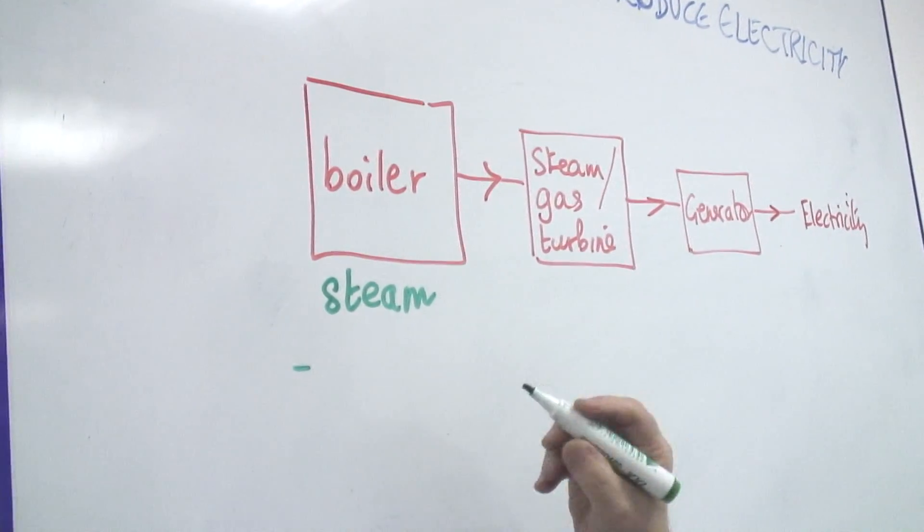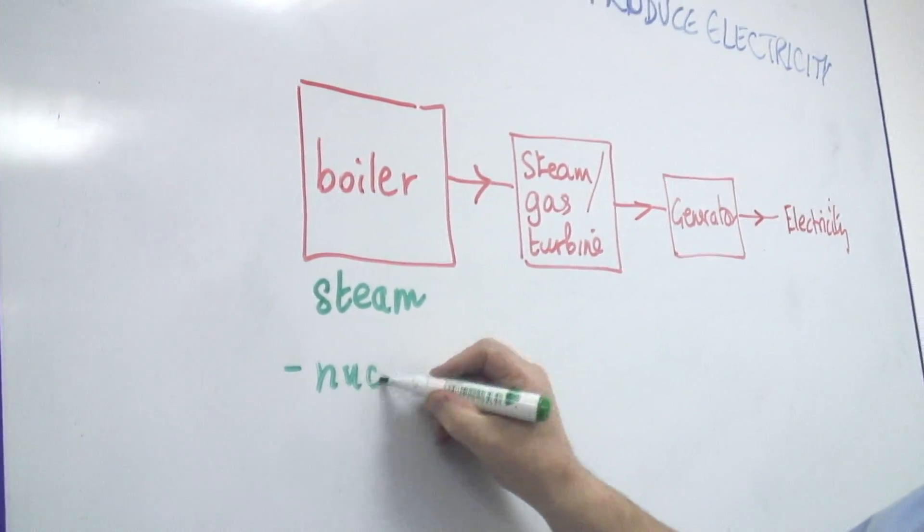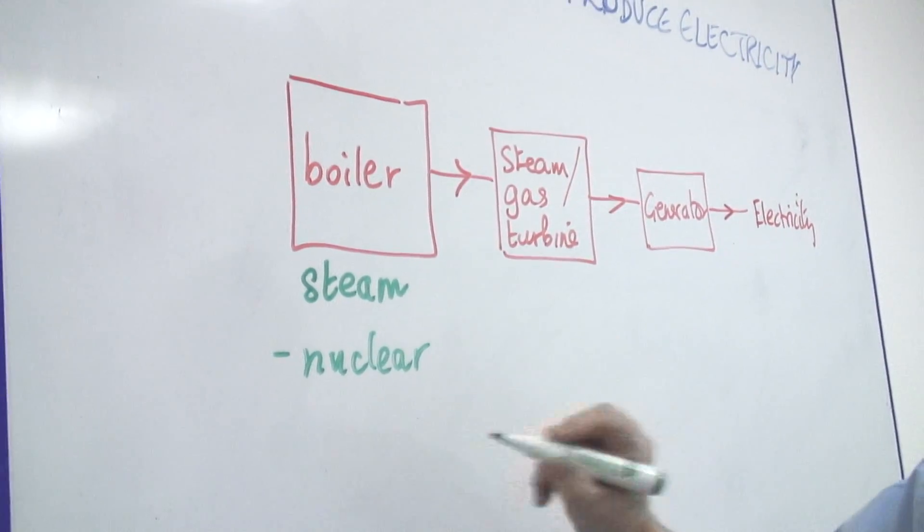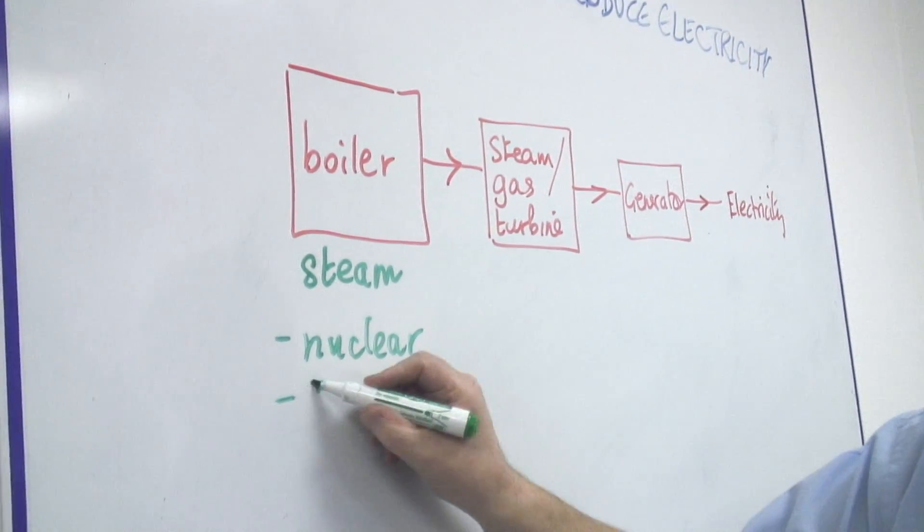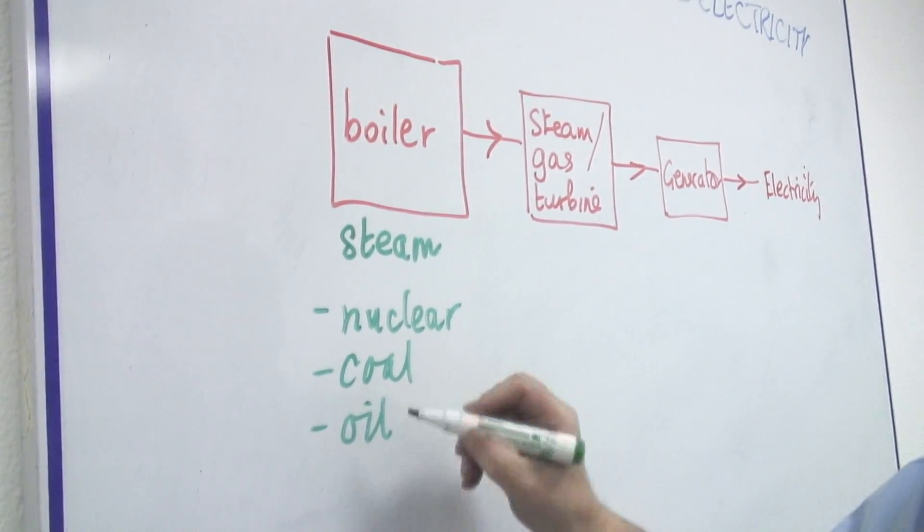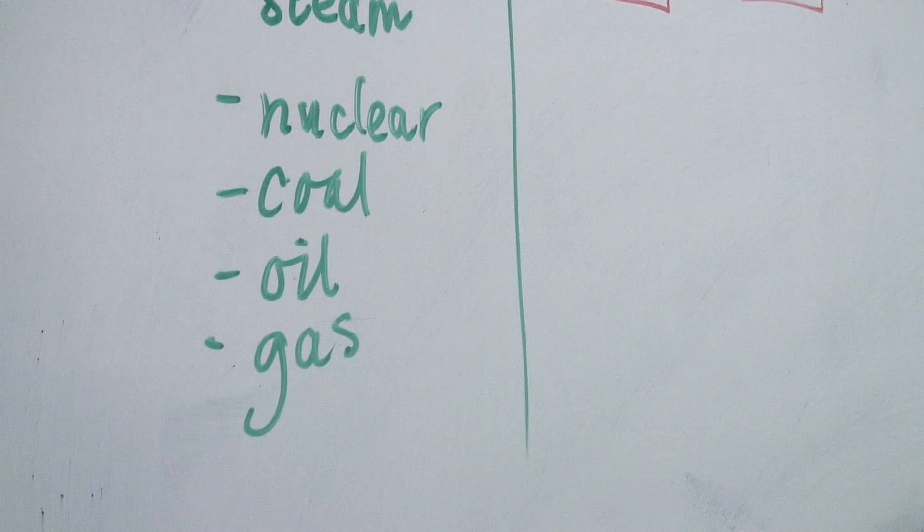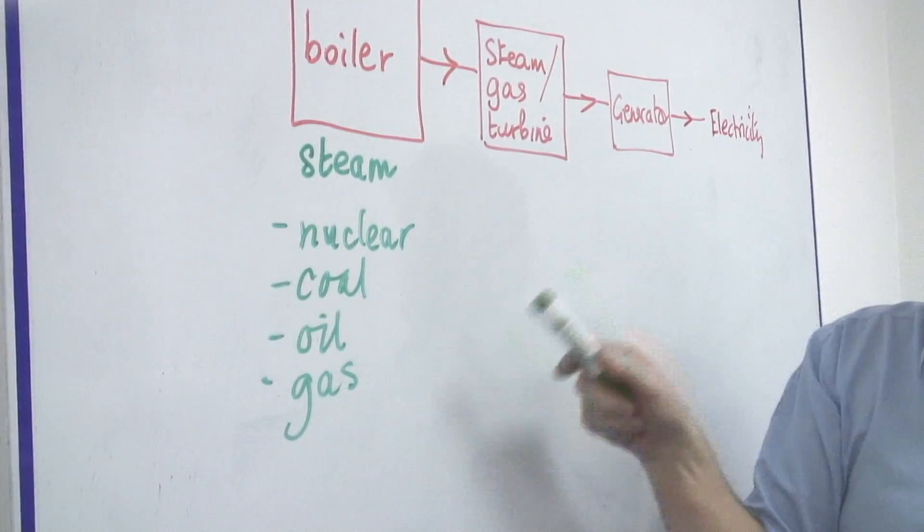The answer is we can produce it from things like nuclear energy, if we wish, a nuclear reactor. We could also use coal or we could use oil or gas. These are the common fuels for producing the steam in a power station.